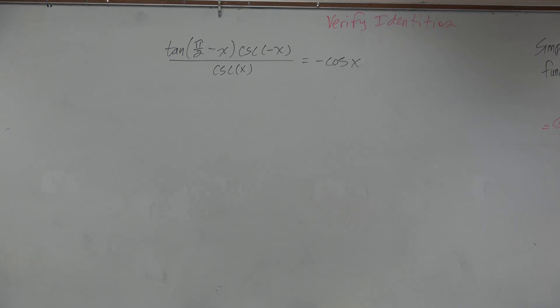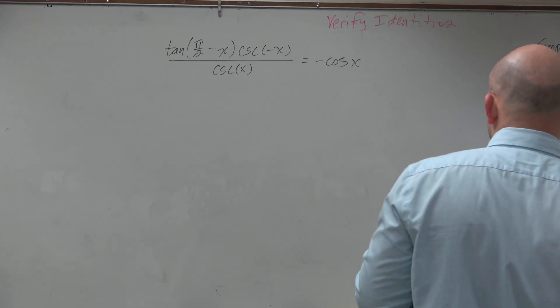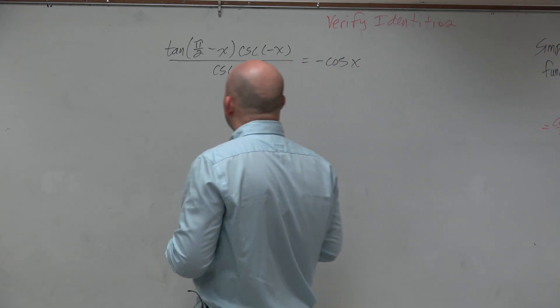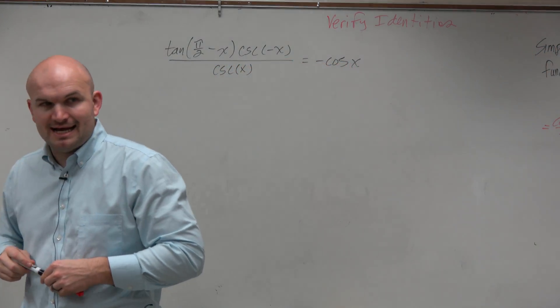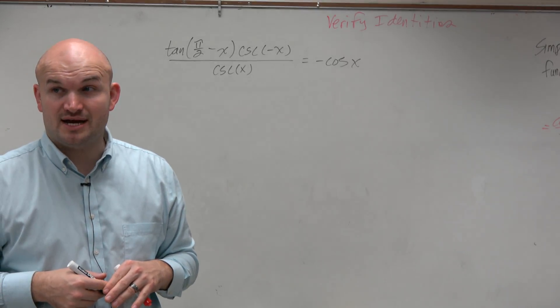What you guys can see here is we have tangent of theta minus x times cosecant of minus x divided by cosecant of x equals negative cosine of x. And we want one side equal to the other side.